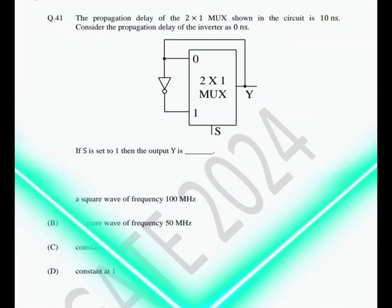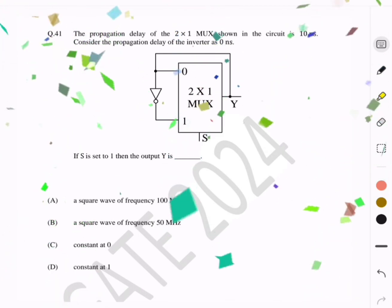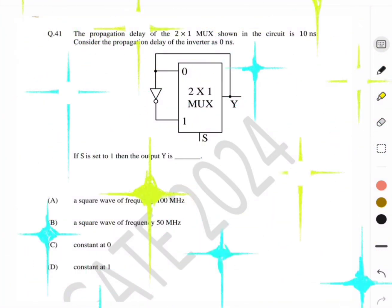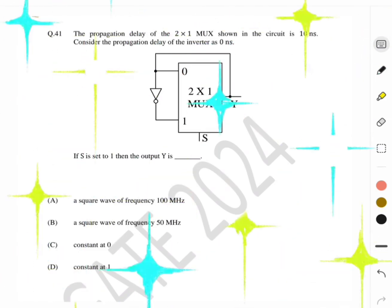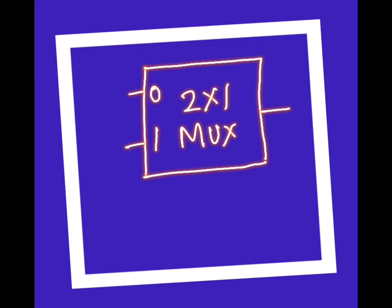Hello everybody, I hope everyone is fine. Today we are going to discuss a question of digital circuits asked in GATE 2024, where it has been said that the propagation delay of the 2-to-1 MUX shown in the circuit is 10 nanoseconds. Consider the propagation delay of the inverter as 0 nanoseconds. If S is set to 1, then what will be our output? First, let us understand the basic working principle of a 2-to-1 MUX.